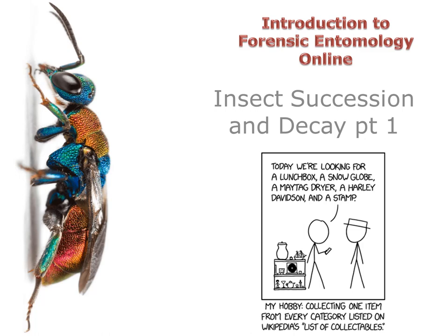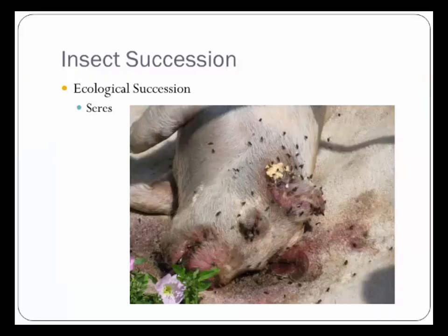Last week we looked at decomposition and various ecological aspects of insects. Now we're going to put the two together and look at how insects affect decomposition and the succession of insects as animals decompose. This is the basic premise for forensic entomology. Necrophagous insects — those feeding on dead tissue — arrive on and in a corpse in a somewhat predictable sequence, called the ecological succession of insects.